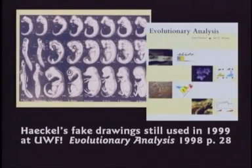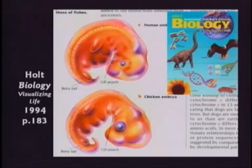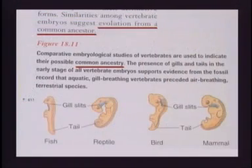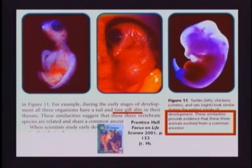But his drawings are still used in textbooks in your county tonight. Proven wrong 125 years ago. Darwin wrote his book in 1859, predicted evidence would be found. In 1869 Haeckel faked the drawings. In 1875 he was convicted of lying. But his drawings are still in textbooks 125 years later. I know it takes a while for textbooks to get up to date, but I think 125 years is long enough. They're still teaching this stuff in textbooks all over the world. This textbook says they have proof of evolution from a common ancestor because of the gill slits on the human. This is simply a lie.